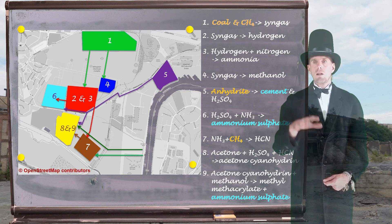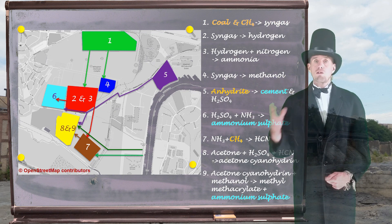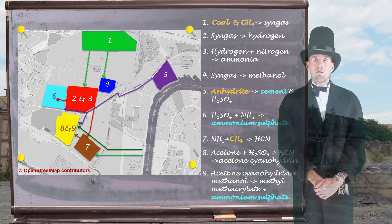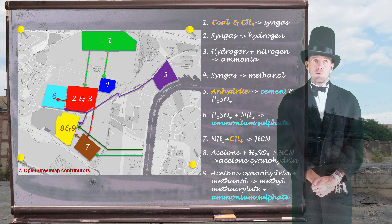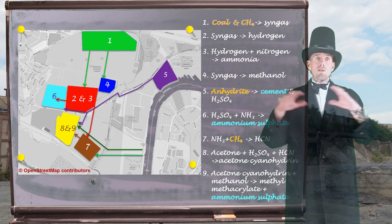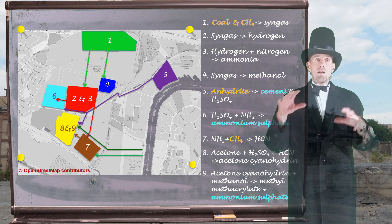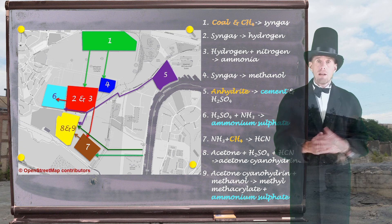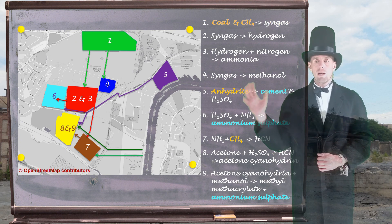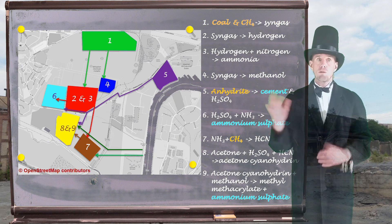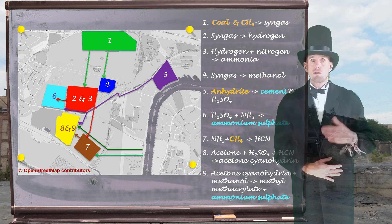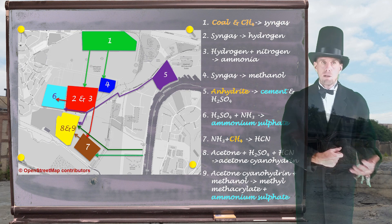That methyl methacrylate was then transported to another works up in the Pennines, in Darwin. And there, polymethyl methacrylate — perspex or plexiglass — was made. So we can see that from just coal, anhydrite and methane, we can make a vast array of important industrial chemicals that result in consumer-facing products: cement, fertiliser, perspex.